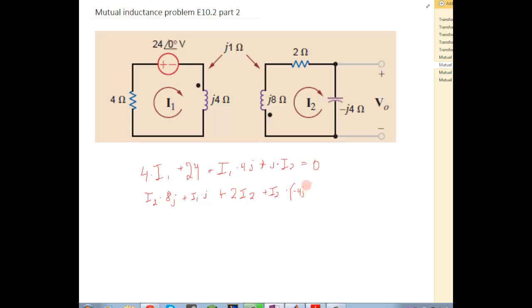So we want to put this in a matrix form. We're going to group the I1s together. So that's I1 times 4 plus 4J and the I2s equals negative 24. So that was all just this top line.